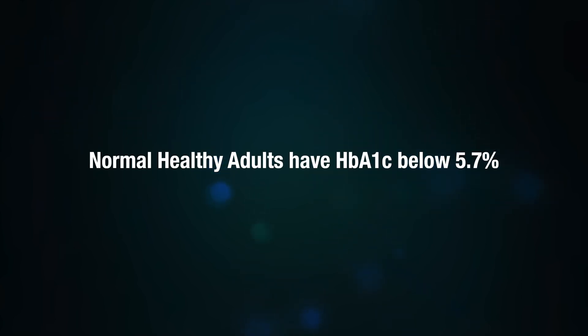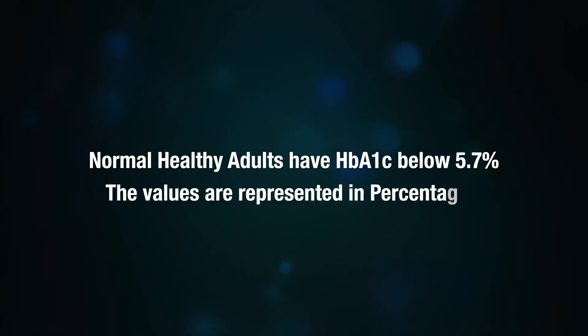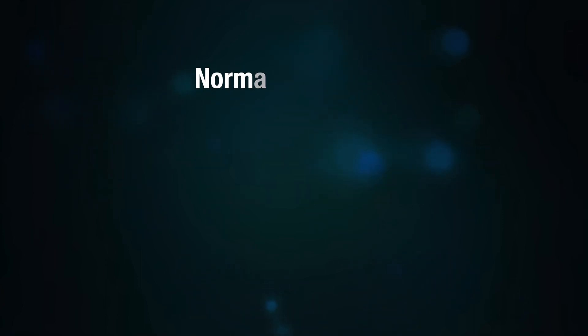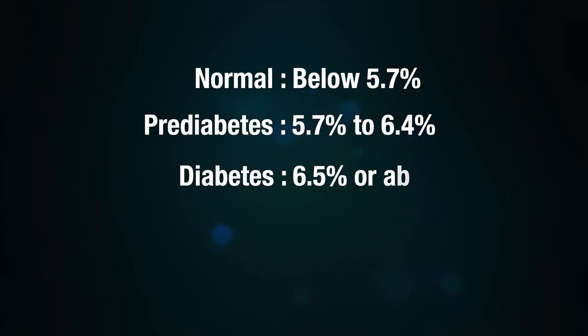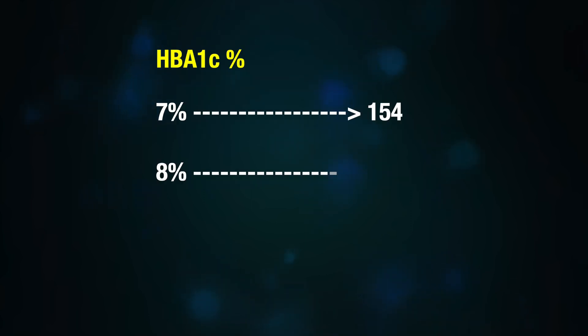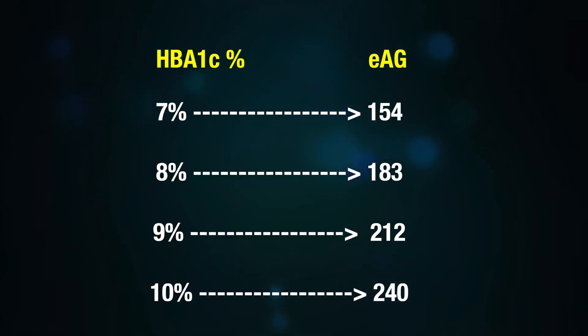Regarding results and the HbA1c normal range chart: the normal range of HbA1c is between 4% and 5.7%. Normal healthy adults have HbA1c below 5.7%. In pre-diabetes it is between 5.7% and 6.4%, and in diabetes it is 6.5% or above. As you can see in the chart, these percentages can also be reported as estimated average glucose.